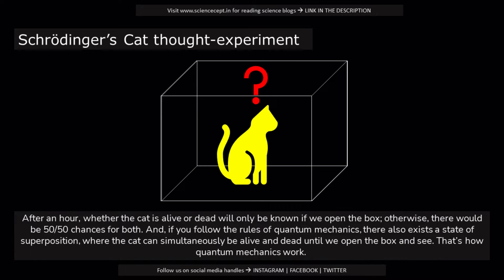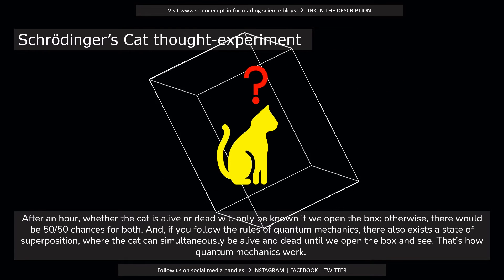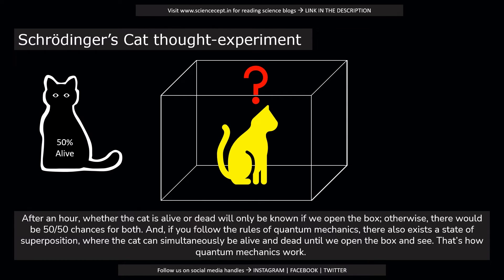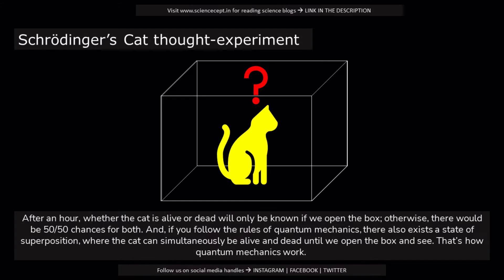After an hour, whether the cat is alive or dead will only be known if we open the box; otherwise, there would be a 50-50 chance for both outcomes. And if you follow the rules of quantum mechanics, there also exists a state of superposition, where the cat can simultaneously be alive and dead until we open the box and see. That's how quantum mechanics works.